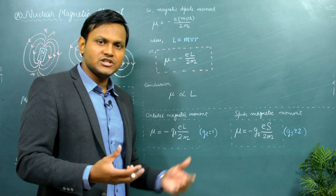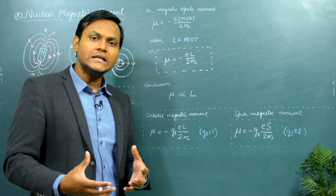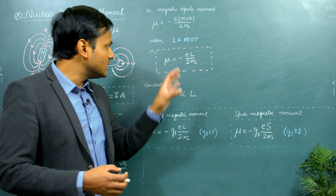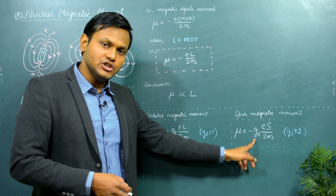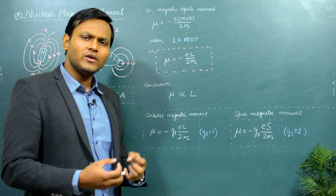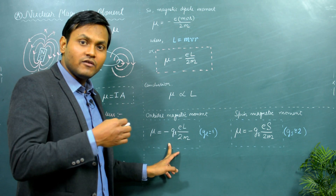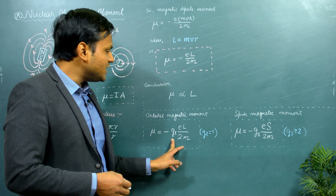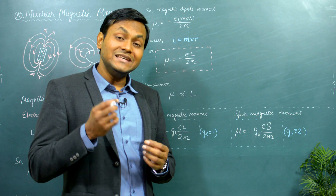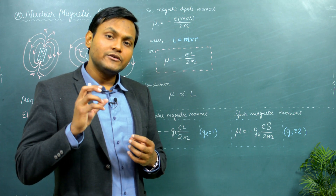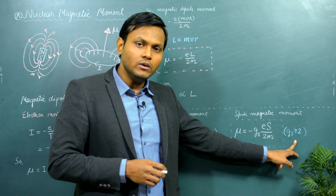g here is a correction factor because the expression for the magnetic moment is derived from a classical point of view. The quantum mechanical magnetic moment has a similar expression, albeit with a correction factor g, known as the g-factor. For the orbital angular momentum, the correction factor g_l has a value of 1, and for the spin magnetic moment, the correction factor g_s has a value of approximately 2.